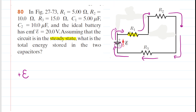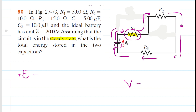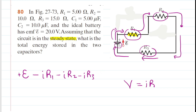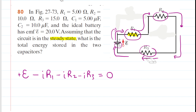Continuing clockwise, the next element we encounter is R1. Going through R1, there is a potential drop, so we include a negative sign. Ohm's law tells us the potential drop equals the current through the resistor multiplied by the resistance, giving us minus I times R1. The same happens for R2: minus I times R2. And finally, R3: minus I times R3. We then return to the negative terminal, having traversed the entire loop, and Kirchhoff's rule tells us to set those potential changes equal to zero. The current is the same through every resistor because this is a series circuit.